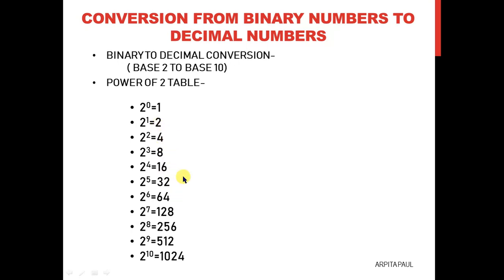For the next numbers: 2 to the power of 2 means 2 into 2, so you add 2 plus 2 to get 4. To get the next value, add the same number to itself: 4 plus 4 gives 8, that is 2 cubed. Then 8 plus 8 becomes 16, which is 2 to the power of 4. Then 16 plus 16 becomes 32 — 2 to the power of 5. 32 plus 32 is 64 — 2 to the power of 6. 64 plus 64 is 128 — 2 to the power of 7. 128 plus 128 is 256. 256 plus 256 is 512, and 512 plus 512 becomes 1024. This is how you can easily memorize the power of 2 table, and this is compulsory for the conversion.